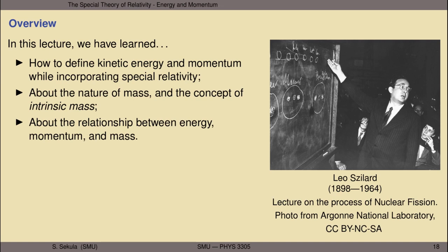To conclude this lecture: we have learned how to define kinetic energy and momentum while incorporating the principles of special relativity. In doing so, we've learned something deep about the nature of mass — that there is intrinsic mass in nature, and that mass is associated with a kind of internal energy of all objects; an object at rest does not have zero energy, but rather internal energy given by mc². We've also learned about the relationship between energy, momentum, and mass — E² = p²c² + m²c⁴ — looked at some applications of the relativistic concept of energy-momentum-mass, and left ourselves with questions to resolve by delving deeper into nature in the next phase of the course.